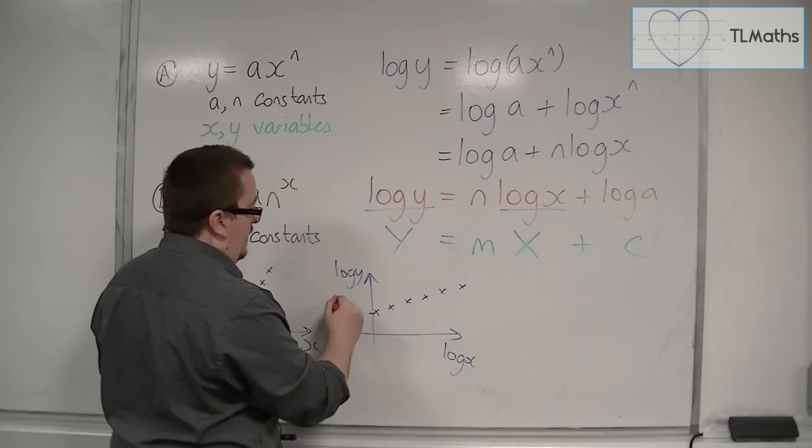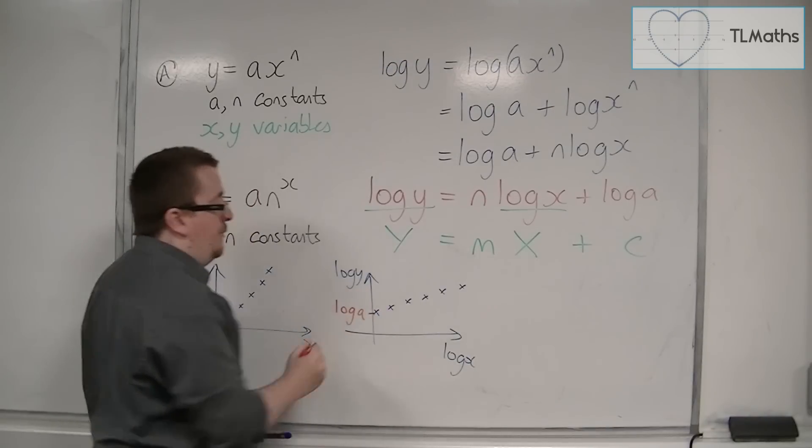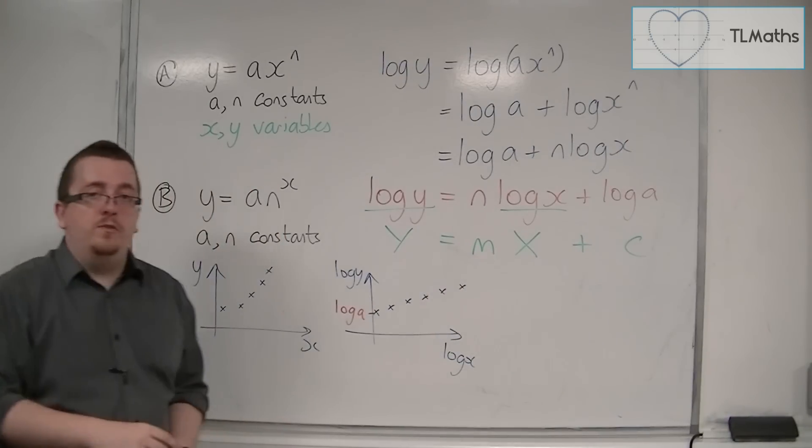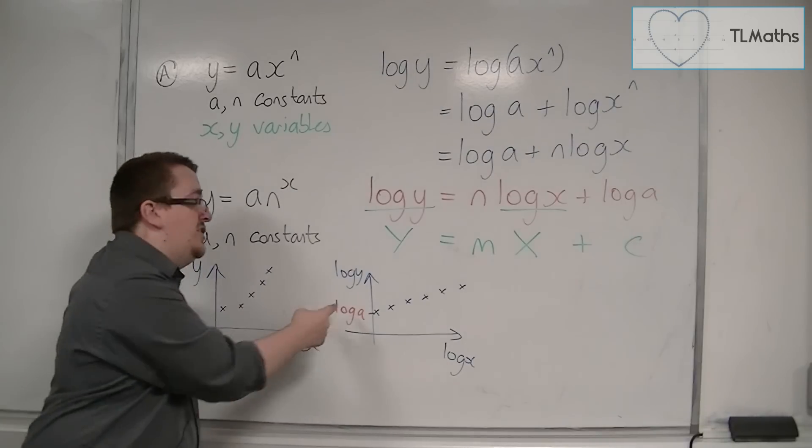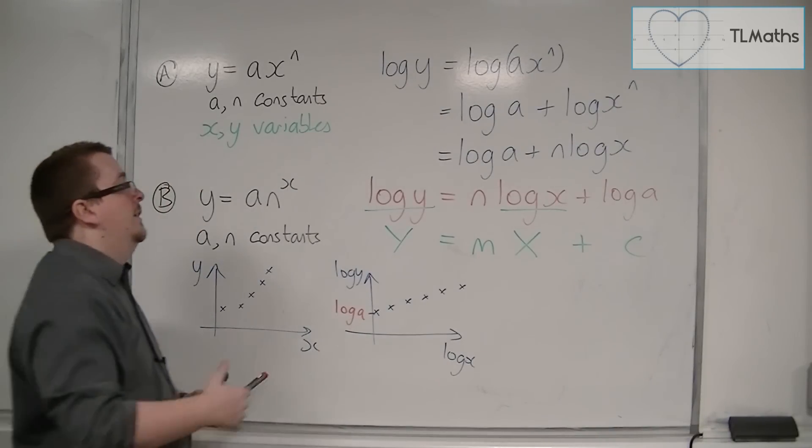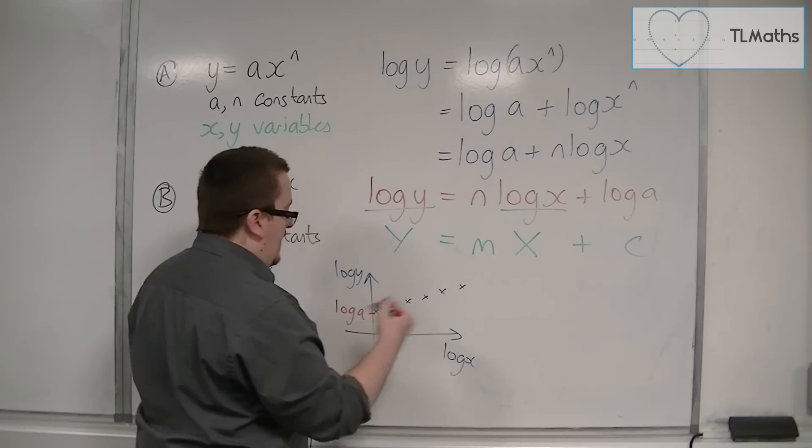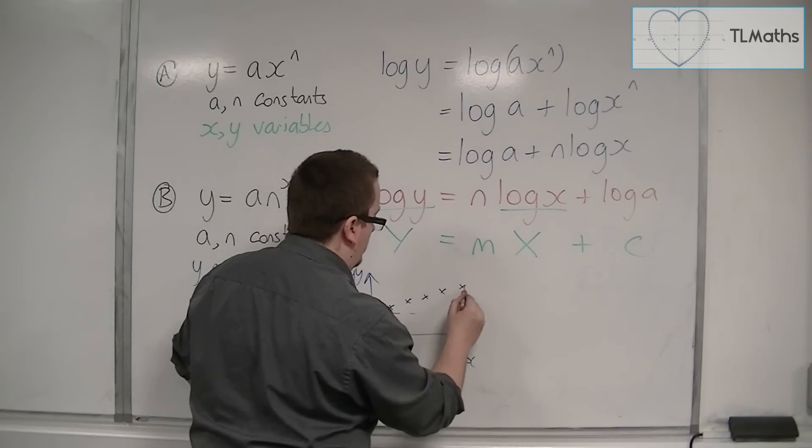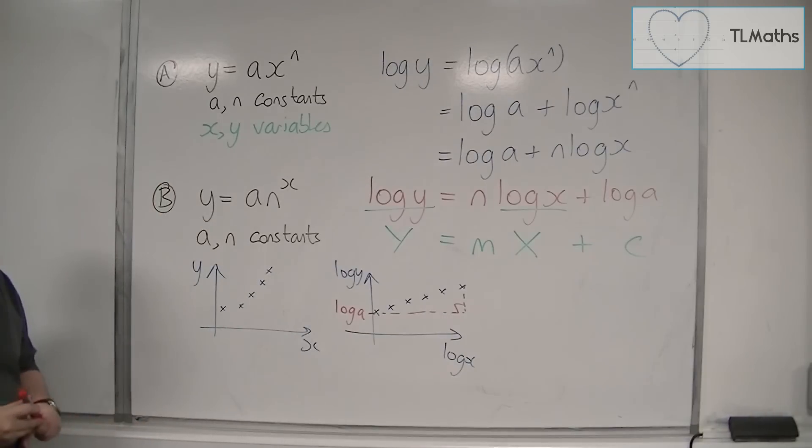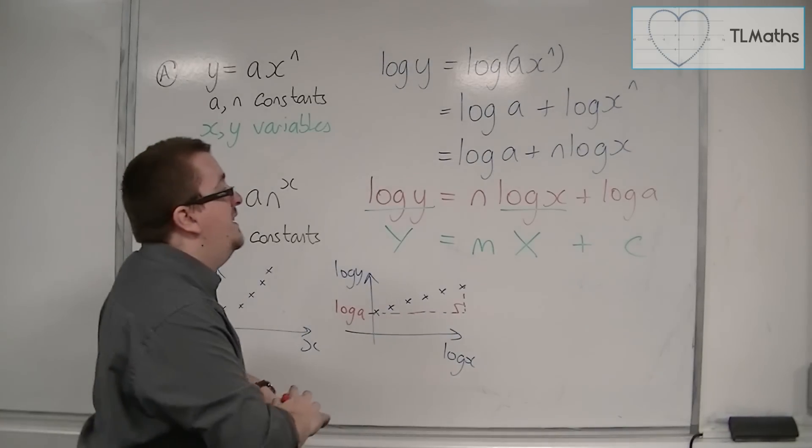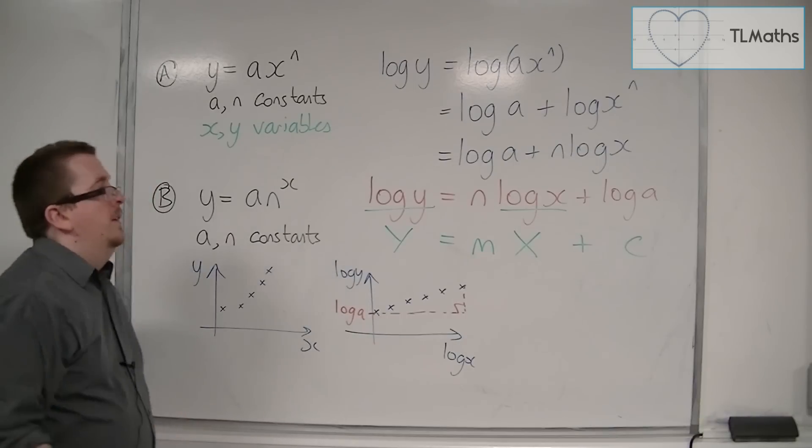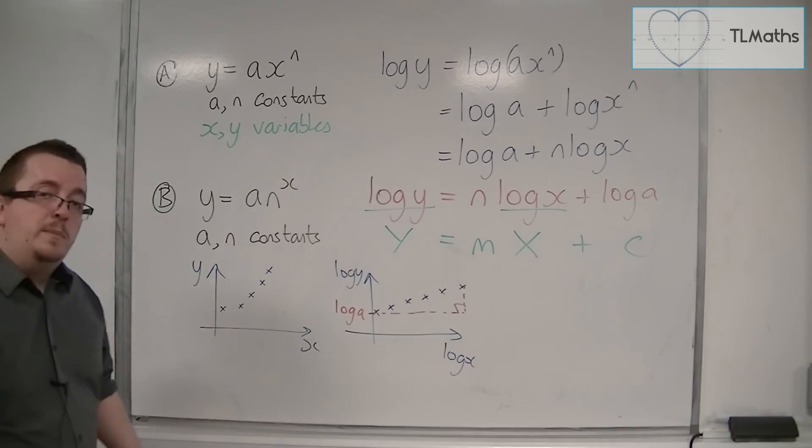And it will be intersecting the y-axis, the log y axis, at log a. And so if I plotted my data and I drew a nice straight line that went through that data, I would be able to estimate what log a is equal to, and I can estimate n by looking at the gradient of the line. And so that will enable me to find n and a.